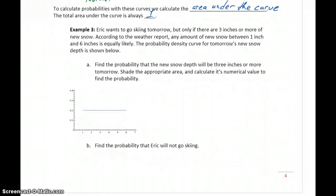So in our last example, Eric wants to go skiing tomorrow, but only if there are 3 inches of snow or more, 3 inches or more of new snow. According to the weather report, any amount of new snow between 1 inch and 6 inches is going to be equally likely, and the probability density curve is provided below.